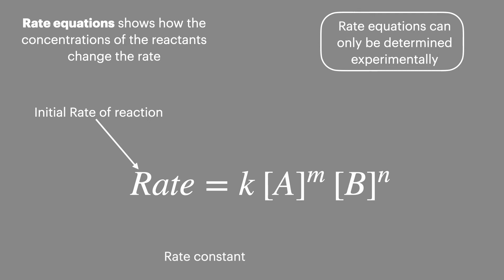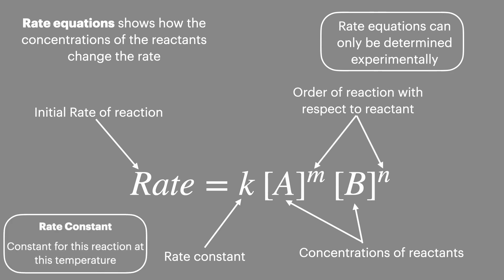This equals the rate constant which is multiplied by the concentrations of the reactants which are held to the power of the order of the reaction. Now the rate constant for this reaction will be constant at this temperature.